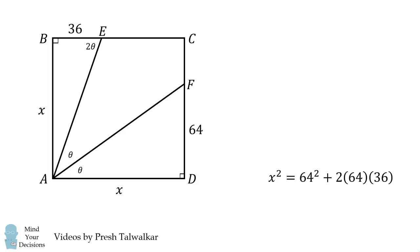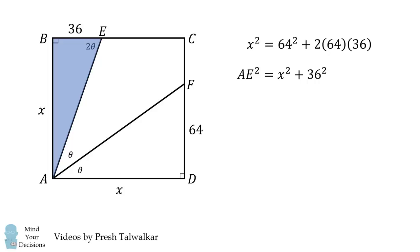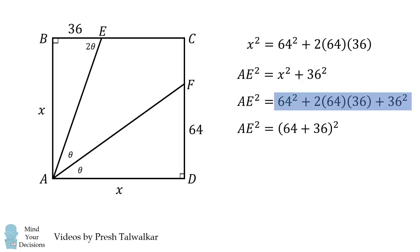The reason is we'll now look at triangle ABE, and we can calculate AE using the Pythagorean theorem. AE squared is equal to X squared plus 36 squared, so we substitute in for X squared. And now, this particular expression should be a familiar expression. We can factor this out. It'll be exactly equal to the quantity 64 plus 36 squared. So AE squared is equal to this square. We take the square root of both sides, and we get AE is equal to 64 plus 36, which is equal to 100. And once again, we arrive at the same answer, but this time using inside-the-box thinking.